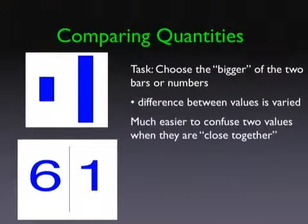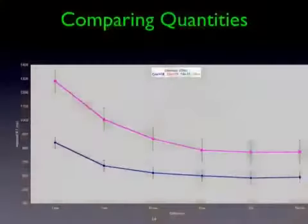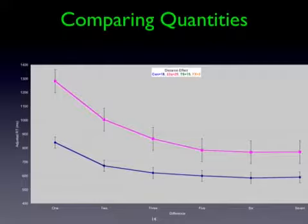In the lab, we have kids compare two bars — which is bigger? Sometimes we do it with numbers. You vary the difference between them, and it's much easier to confuse two values when they're close together. I often ask people: where is the number 1? People point right in front of them. Where is a million? People point further out — we think of numbers going off spatially, the bigger they are the further away. Typically developing kids slow down only a little when differences are very small, but quickly even out. Kids with the deletion show an enormous slope — needing a much bigger difference before they can see the difference — consistent with everything else, until large differences where performance is similar though much slower.